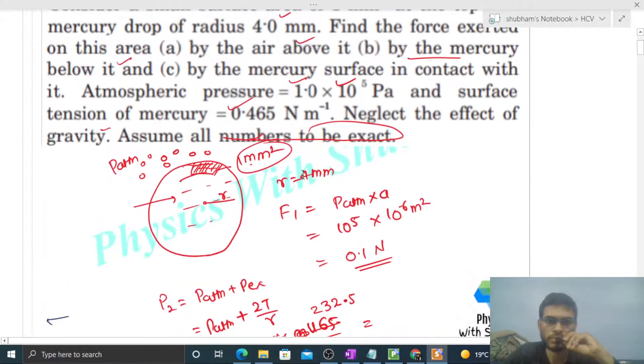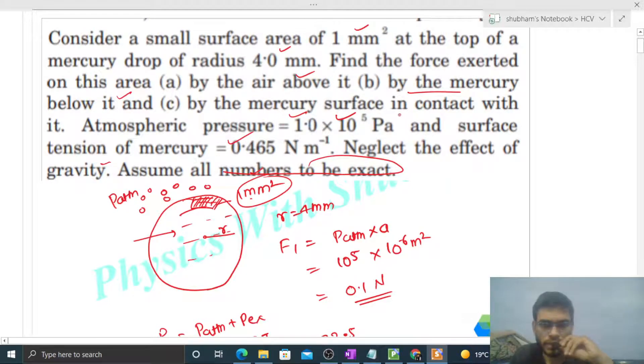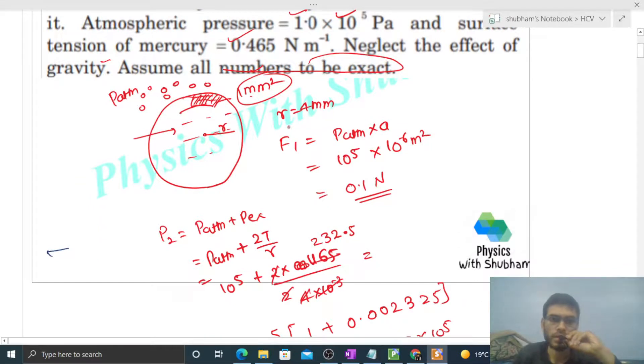Let's check part C - by the mercury surface in contact with it. So let me draw the free body diagram of this surface area. From above, F1 force is applied which the air applied. From below, F2 force is applied, which the mercury applied.